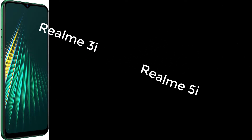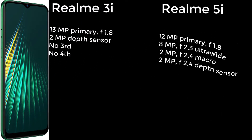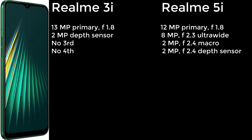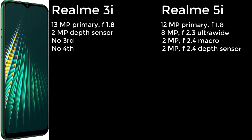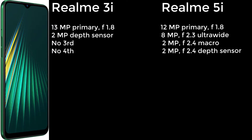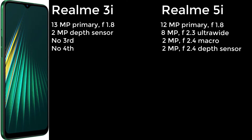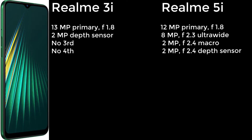Now let us check the camera. The 3i has a 13-megapixel primary camera with f/1.8 aperture and a 2-megapixel depth sensor. There is no third or fourth camera on this phone.